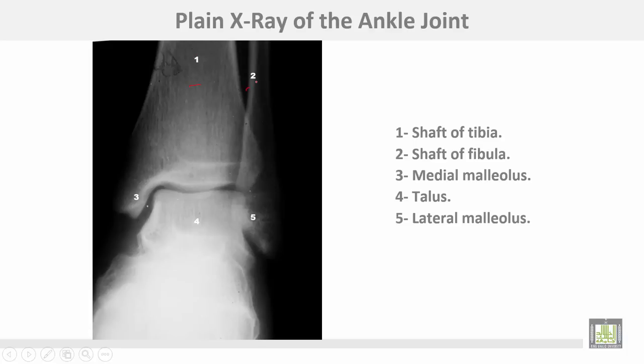This plain X-ray of the ankle joint shows the shaft of the tibia, the shaft of the fibula, the medial malleolus, the talus, and the lateral malleolus.